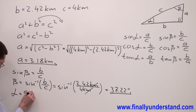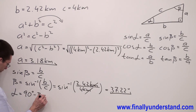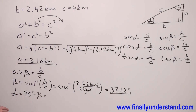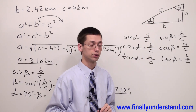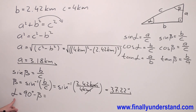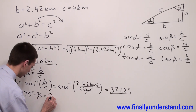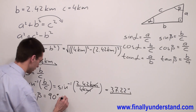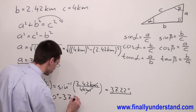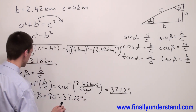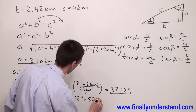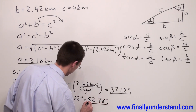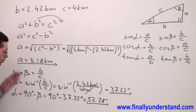In order to find angle alpha, you simply subtract angle beta from 90 degrees. Angle alpha plus angle beta equals 90 degrees, so alpha equals 90 degrees minus 37.22 degrees, which gives 52.78 degrees. These are the solutions to the problem.